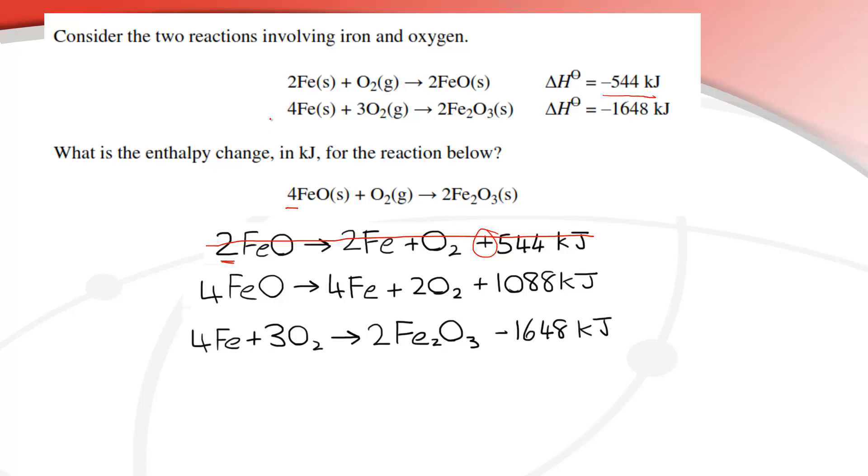Next we have the second equation. We don't need to change this equation because all the species, especially the Fe2O3, that's on the right side of the arrow here and it's on the right side of the arrow in our final equation, so we don't need to change that equation at all.